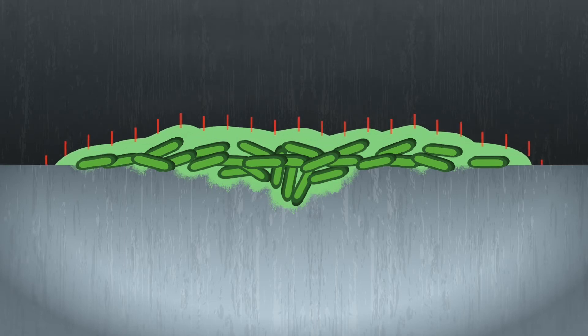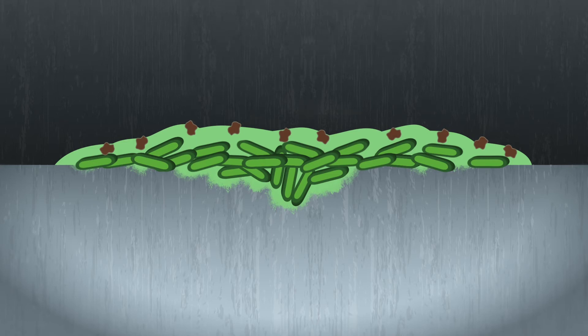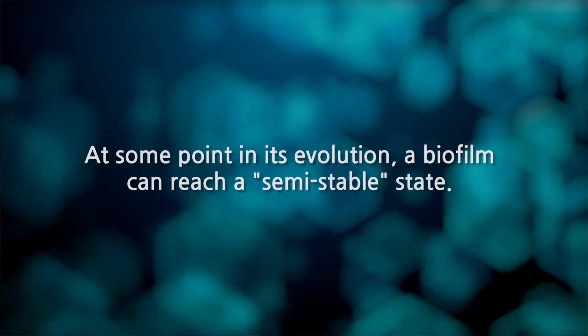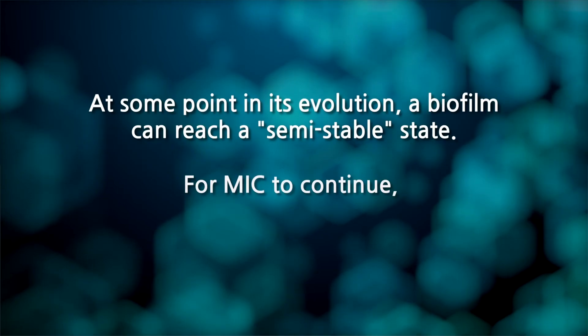As the biofilm grows, the sticky polymers surrounding the microorganisms attract and hold solid debris and corrosion products. The solid particles provide additional structure to the biofilm and may eventually displace the biological components. At some point in its evolution, a biofilm can reach a semi-stable state.